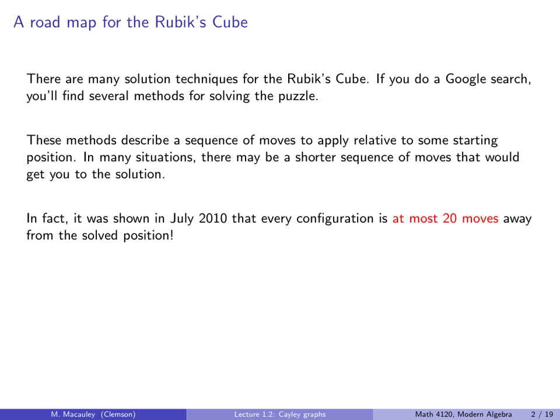And now when they say 20 moves, this group of researchers, they are actually allowing 180 degree twists, which is different from what I said in the previous lecture. But still, it tells you that every one of those 4.3 times 10 to the 19 configurations is very close to the solved state. And now no one who could solve the Rubik's Cube actually knows the shortest path. They just have a collection of moves that they use.